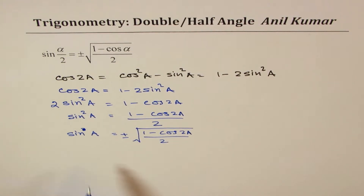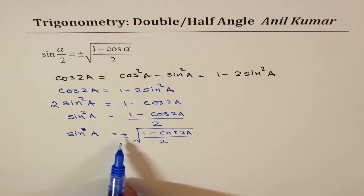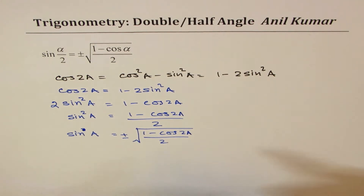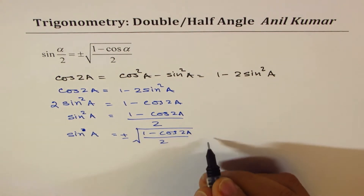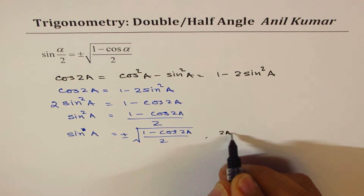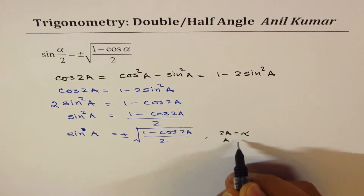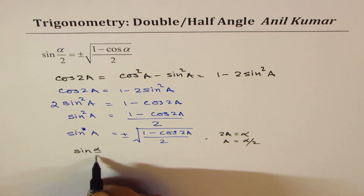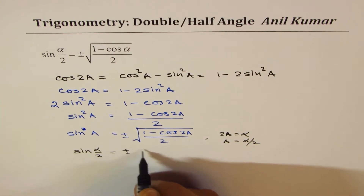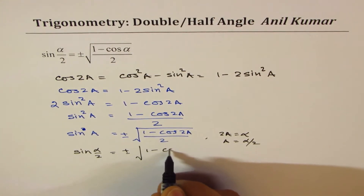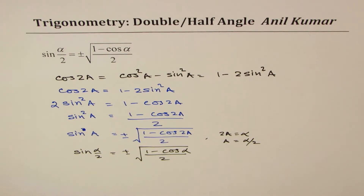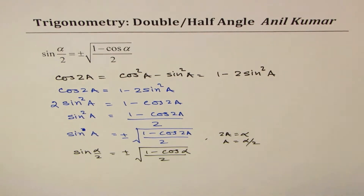Whenever you take the square root, you have to include plus or minus, since sin can be positive or negative depending on which quadrant you are in. So sin(α/2) equals plus or minus square root of (1 minus cos α) over 2. That is how you derive the half-angle formula for sine.